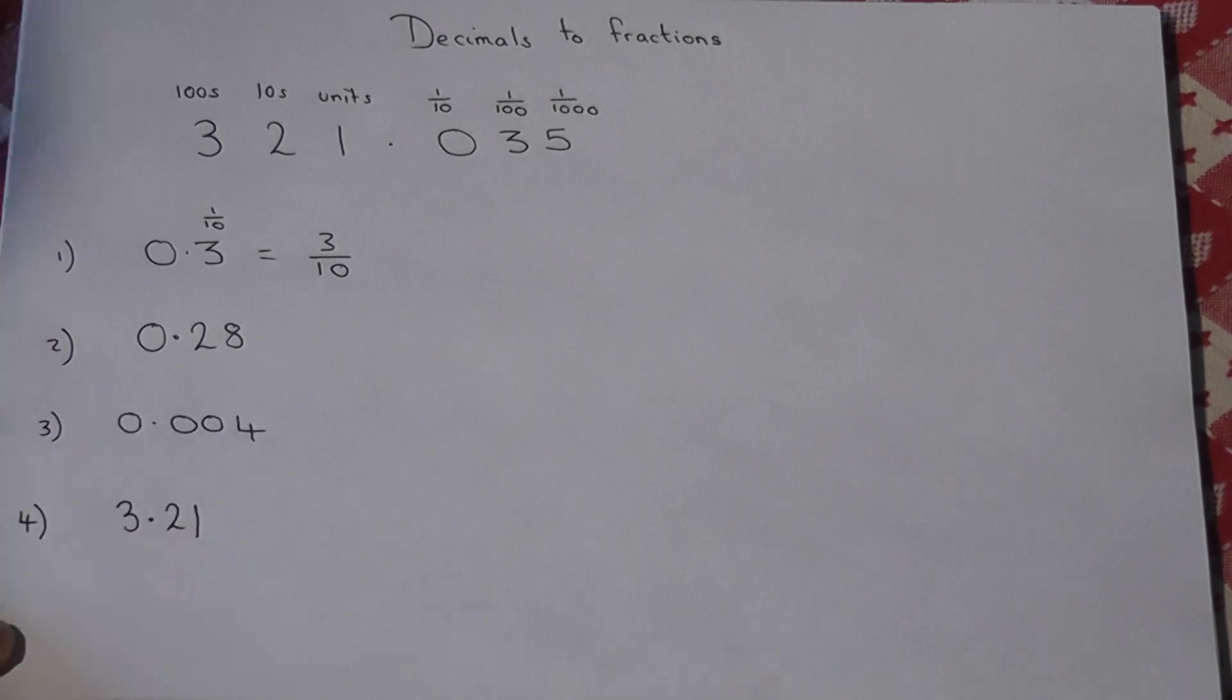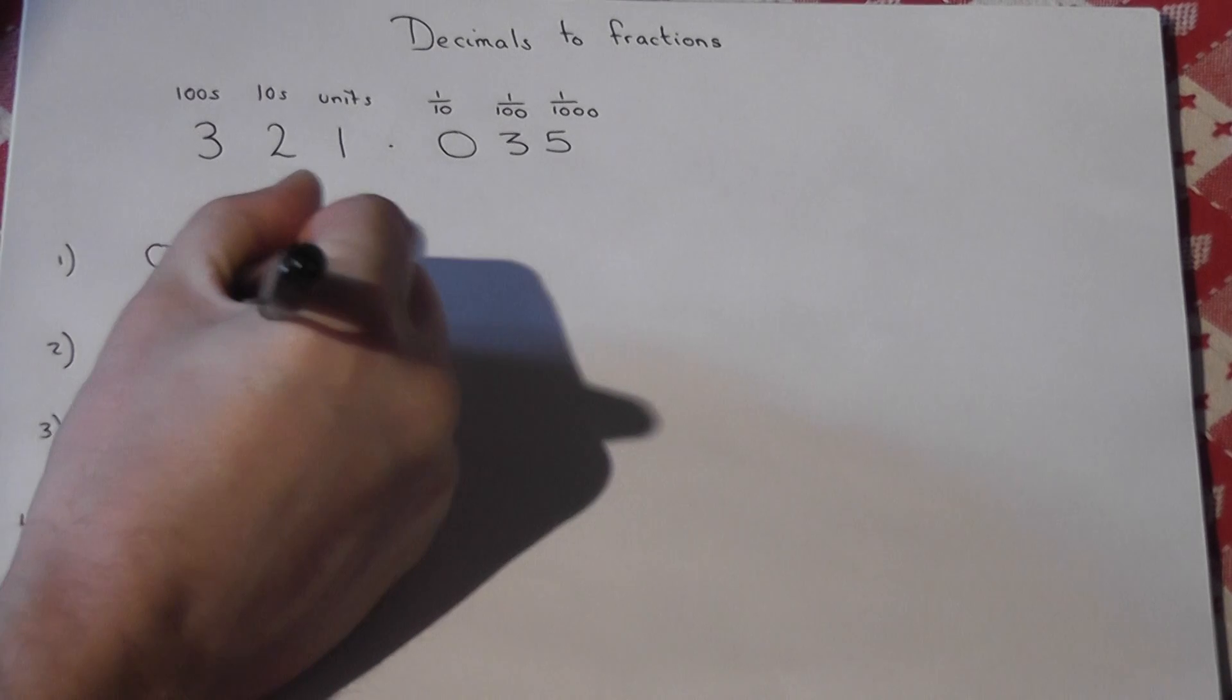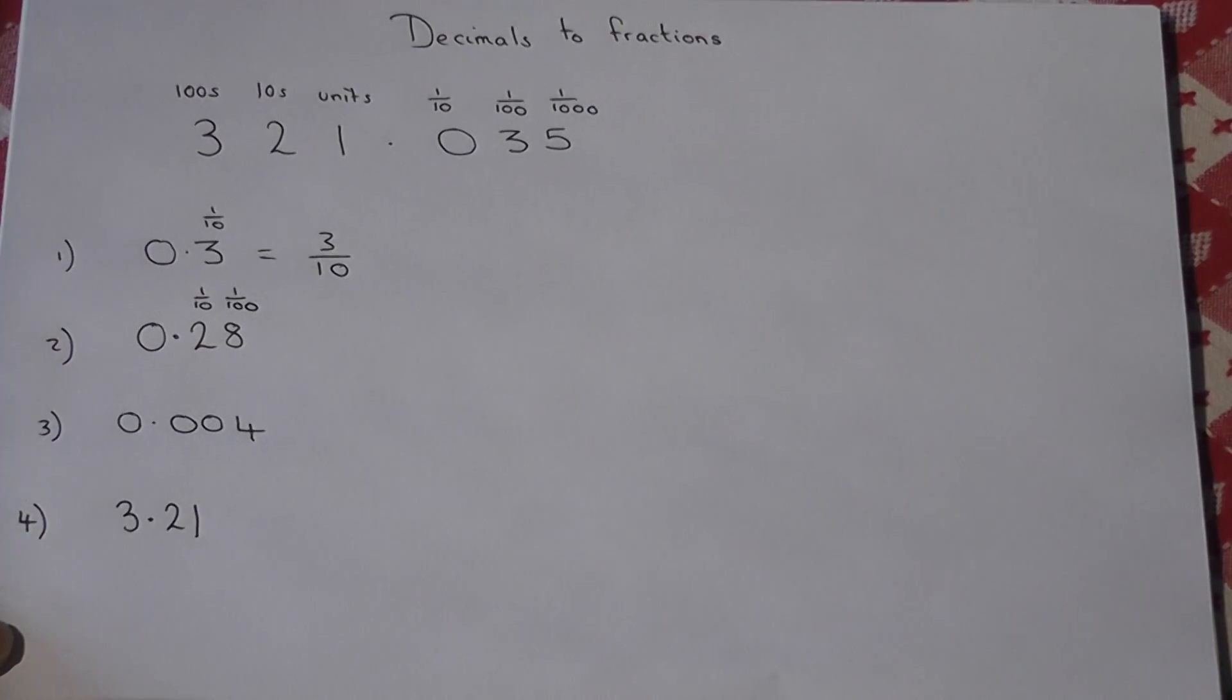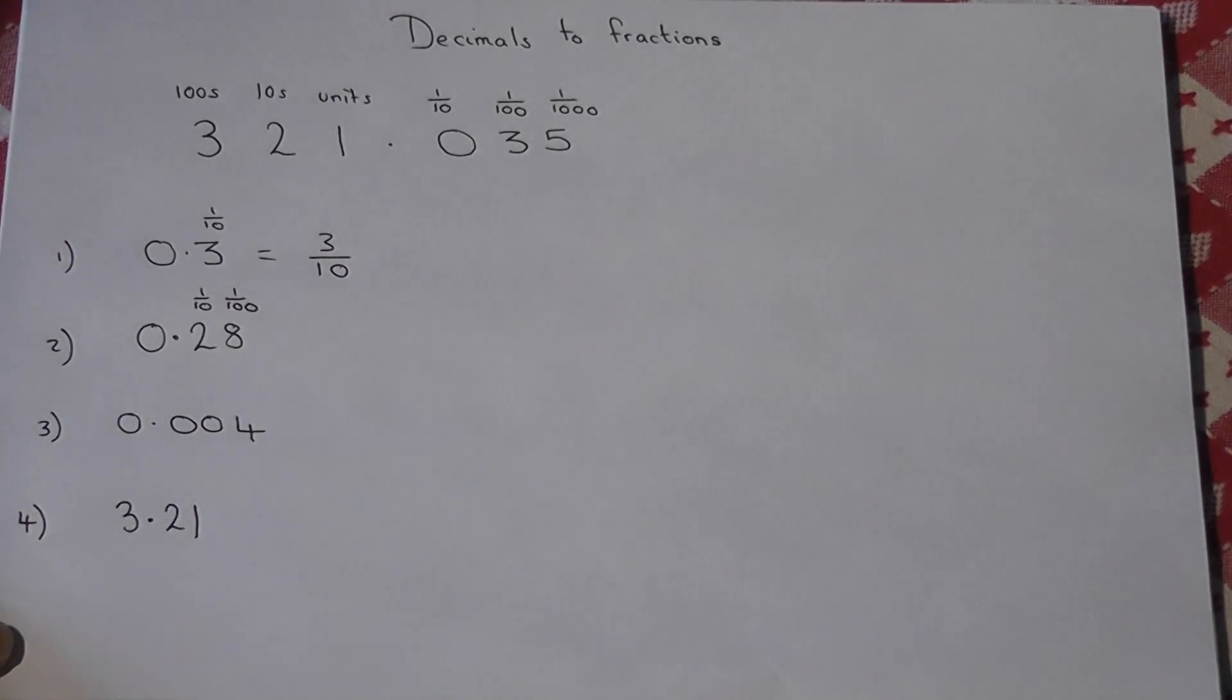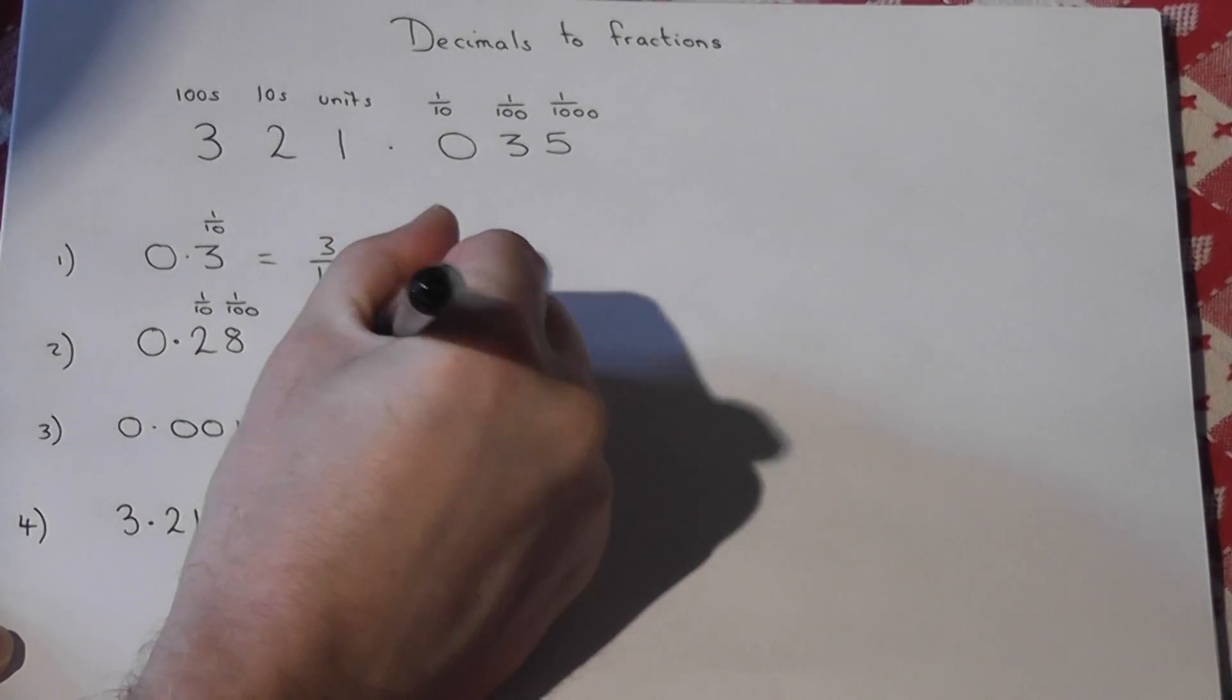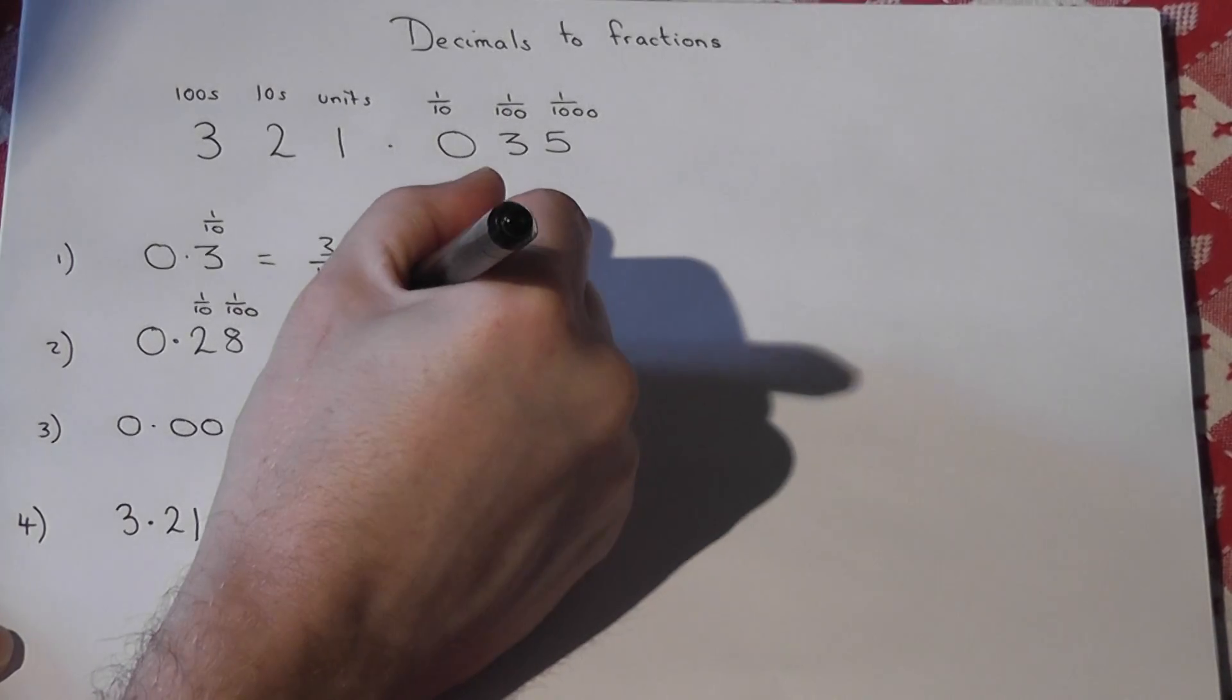So 0.28, that's got two columns there. It's got tenths and it's got hundredths. Now you look at the furthest most column to the right. So therefore this number is over a hundred.